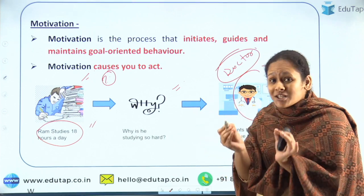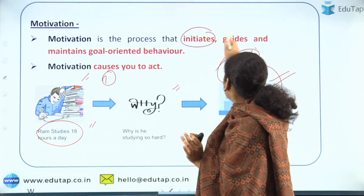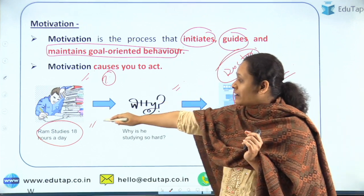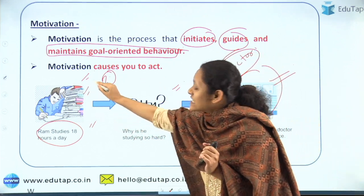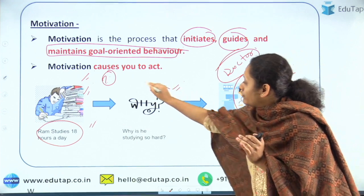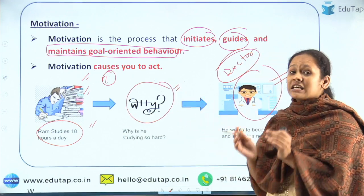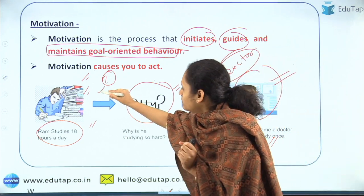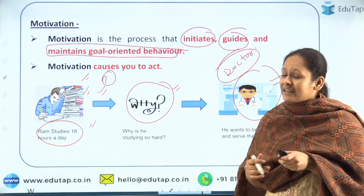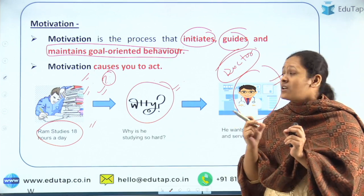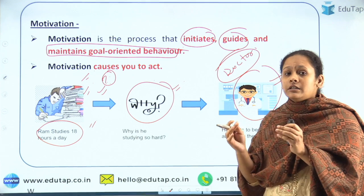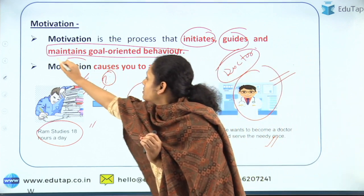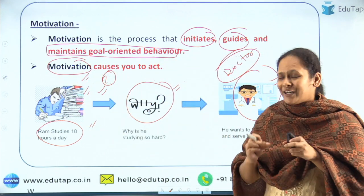Motivation is nothing but a process which initiates, guides and maintains goal-oriented behavior. Because Ram wanted to become a doctor, he initiated his action of studying hard. Why did he want to become a doctor? To serve the needy ones. And in order to become a doctor, he had to maintain goal-oriented behavior — he had to study persistently. So whatever goals or achievements we want to have in life, it is motivation which causes us to act accordingly.